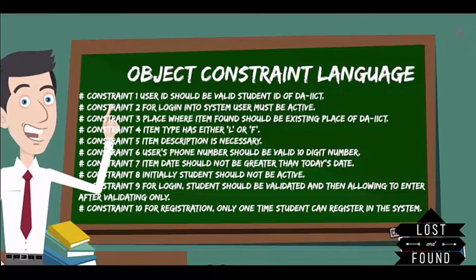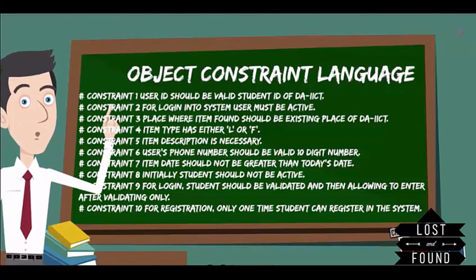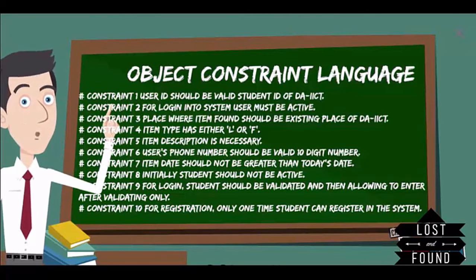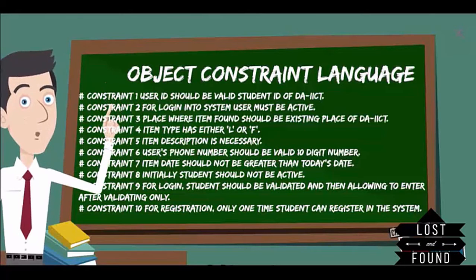Seventh, to prevent wrong entries, we record the date and time of the found or lost item, ensuring only valid complaints exist in the system. Eighth, at registration, we send one link to the student's webmail containing a code that activates the user account. Ninth, login should be allowed only for registered and active users. Tenth, to prevent multiple registration, a user can register only once in the system.